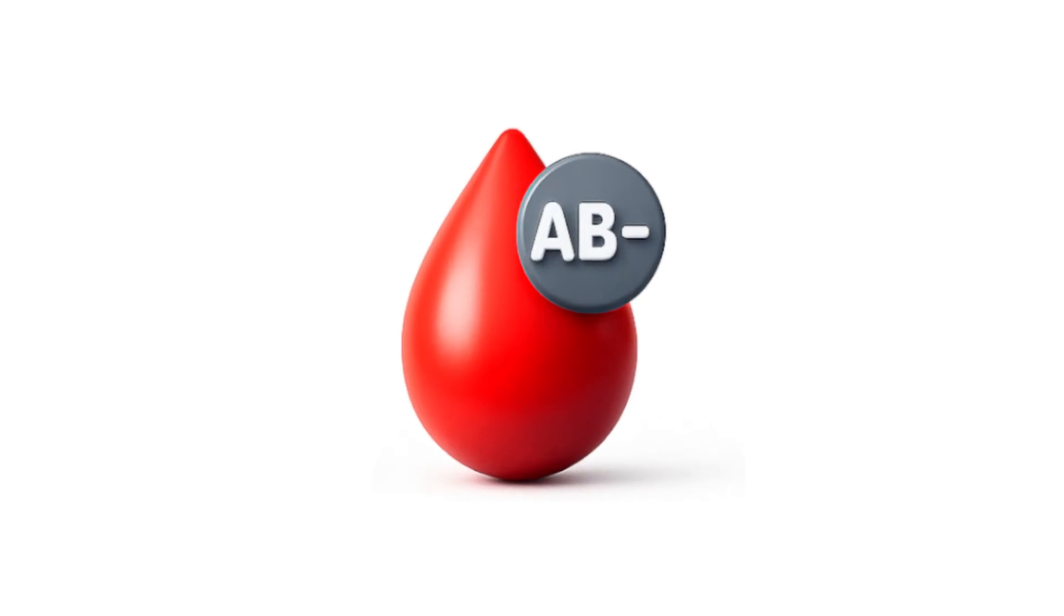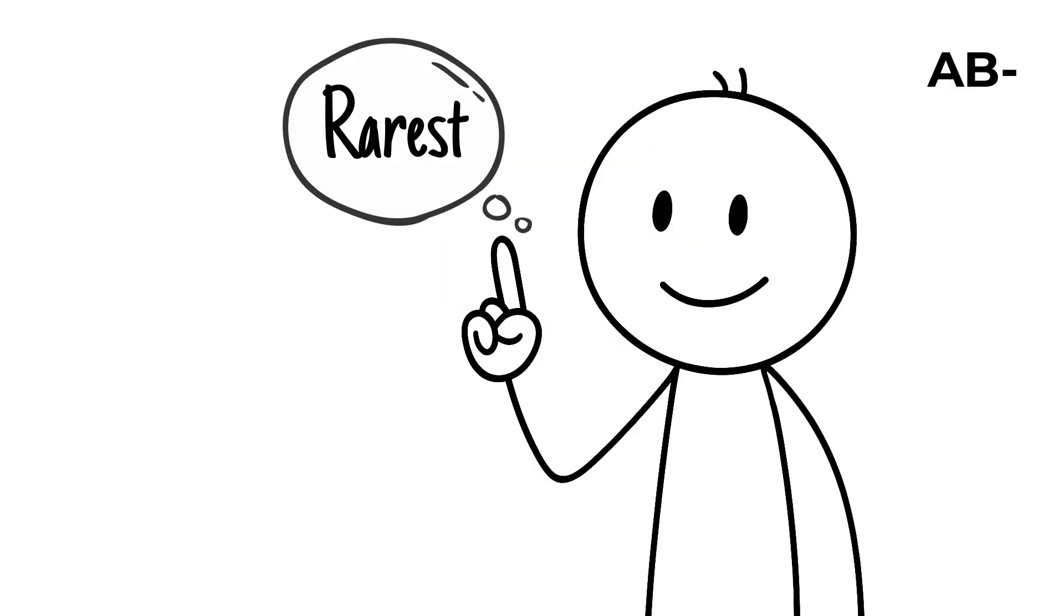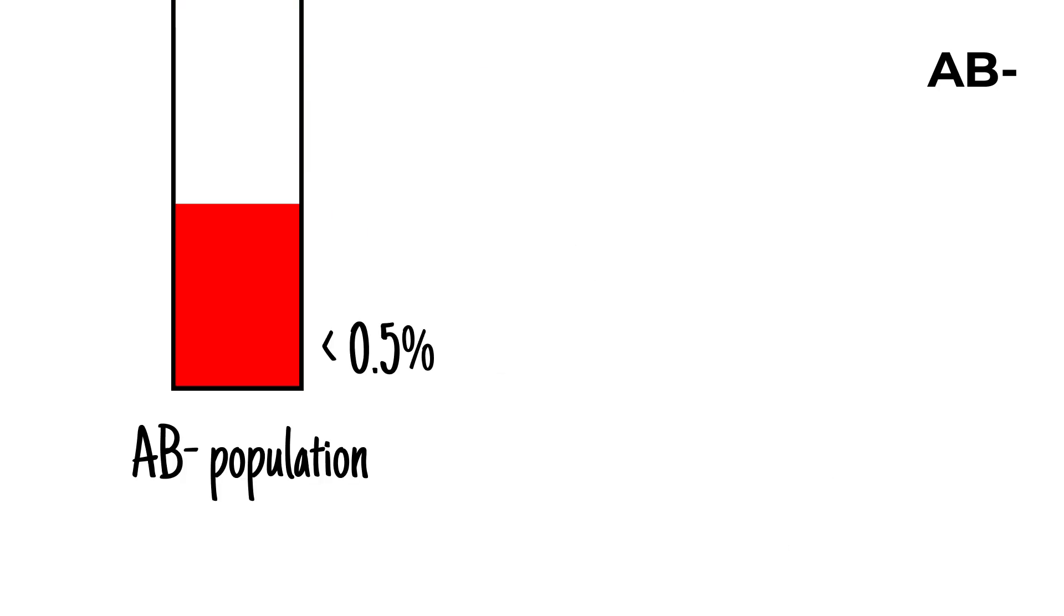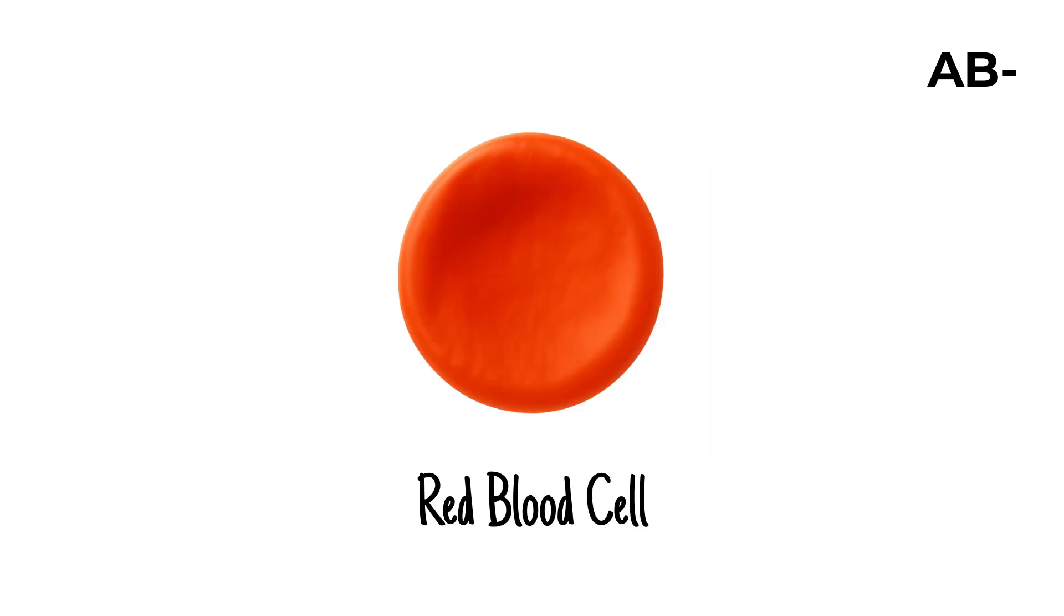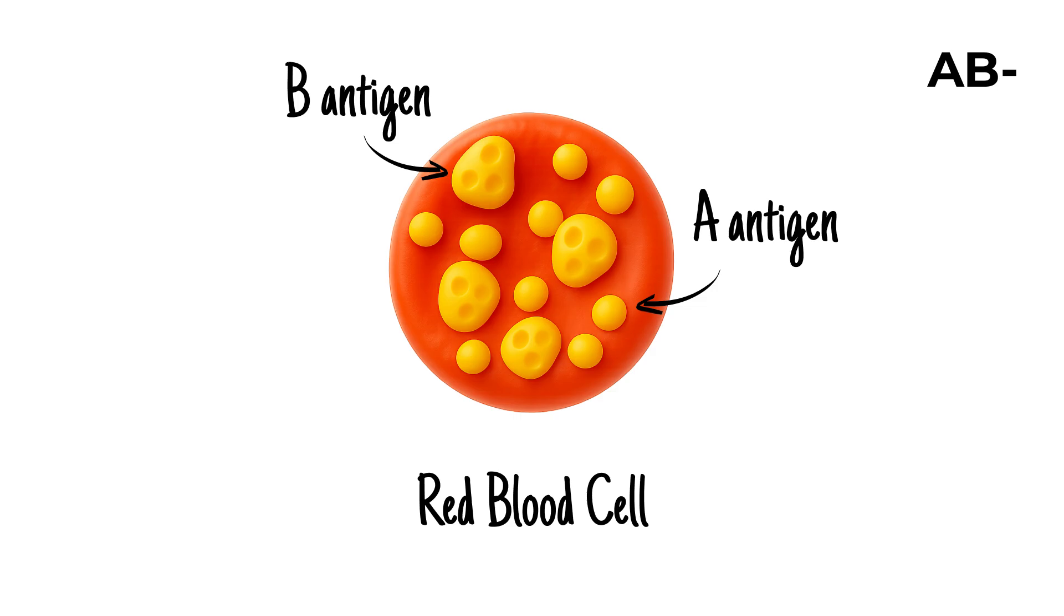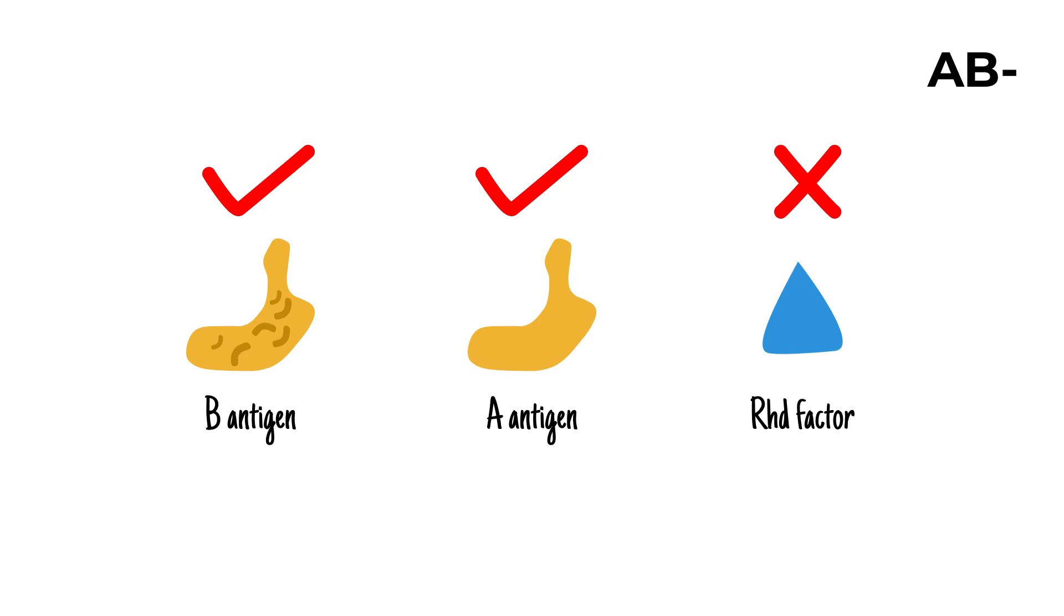AB negative is the rarest of all eight main blood types, found in less than half a percent of people worldwide. Its red blood cells carry both A and B antigens but lack the Rh D factor, a combination that makes it extraordinarily uncommon.